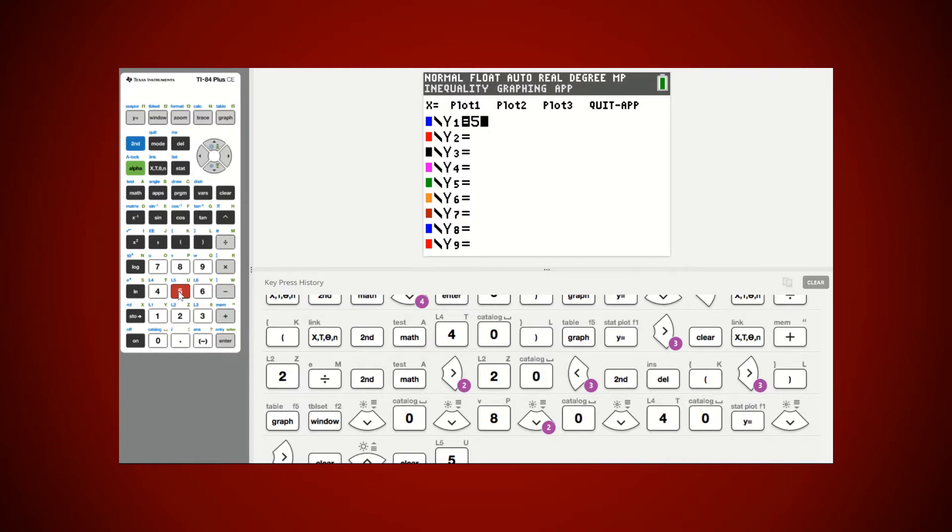Now, how am I going to put in this greatest integer of x? Well, I'm glad you asked. I'm going to go to the math button. I'm going to move over here to number. And right here at number five, I see int. That is for integer. So I'm going to choose option five.